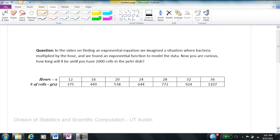Now you're curious. How long will it be until you have 2,000 cells in the Petri dish? If you haven't watched the video on finding an exponential function, I recommend that you go watch that one first, because you'll see how we got to our function of g(x) is equal to 219.32 times 1.046 to the t.